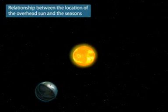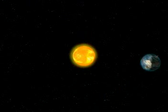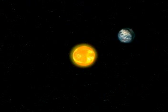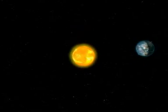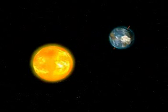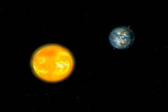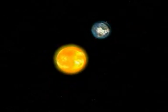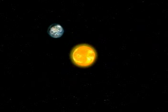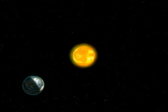Relationship between the location of the overhead sun and the seasons. The revolution of the Earth and the tilting of the axis results in a different angle of the sun during different periods. When the sun is directly overhead, we call this the overhead sun. At this time, the Earth's surface and the midday sun form a 90-degree angle. Different locations of the overhead sun result in variations in the amount of solar radiation received in different areas and at different periods.